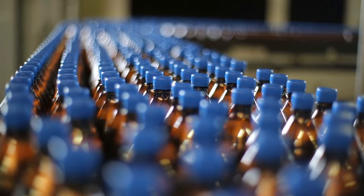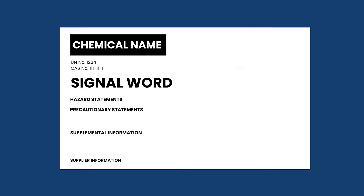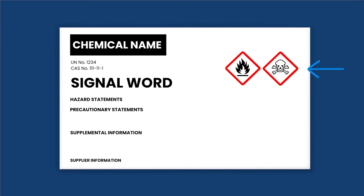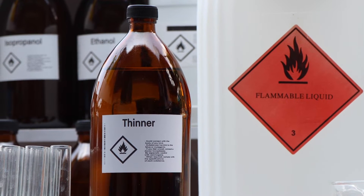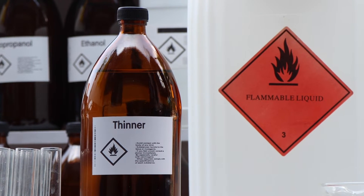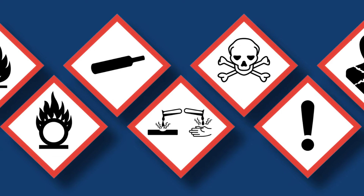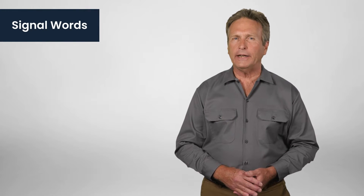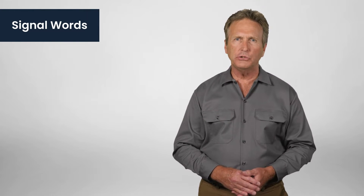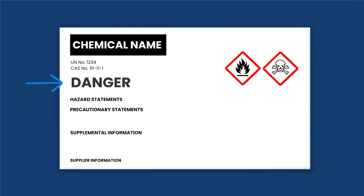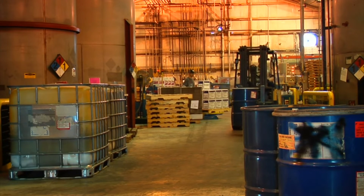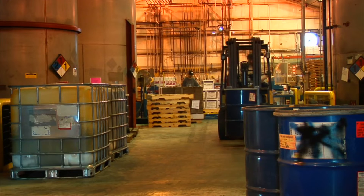Pictograms are the visual symbols we use to represent specific hazards associated with the chemical, like flammability or toxicity. They're designed to be universally understood, conveying hazard information at a glance. We'll cover these pictograms in more detail later. Danger or warning are the two signal words used in the GHS system. Danger is used for more severe hazards, while warning indicates a less severe hazard. They quickly grab attention, letting you know the chemical poses some risk.